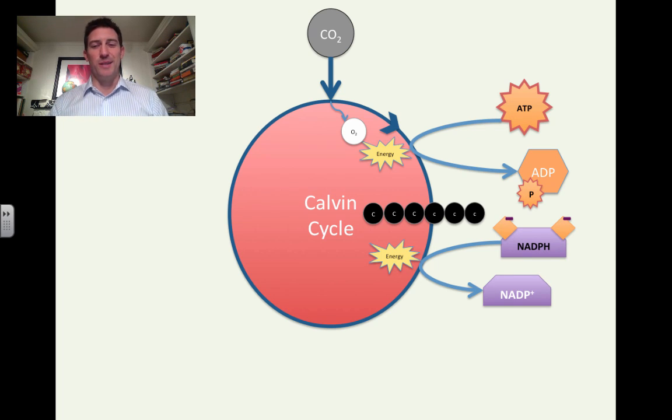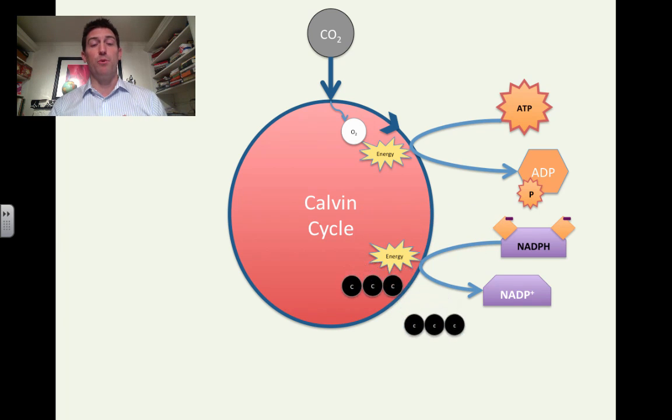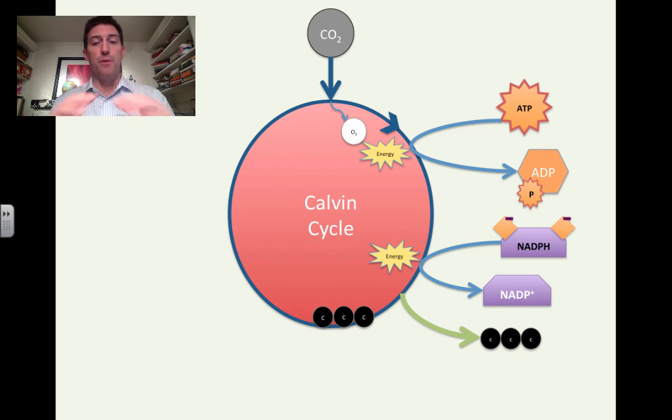Now this six carbon chain has been hammered—bam, bam—hit by two different sources of energy. When that happens, it breaks apart into two three carbon chains. There is other stuff attached to all of this carbon, just not showing that. Three of those leave the cycle. They're just going to wait. The other three stay in the cycle. They're going to be recycled and used again to make the next step.